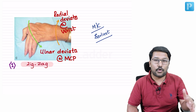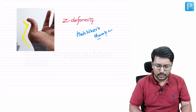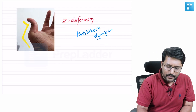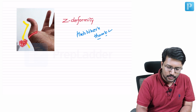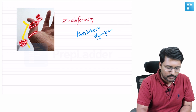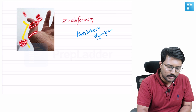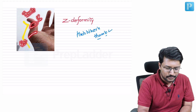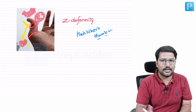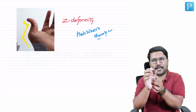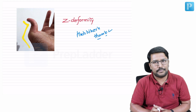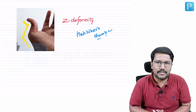Z deformity is also known as hitchhiker's thumb. In Z deformity, the metacarpophalangeal joint is flexed — there is flexion at the metacarpophalangeal joint and extension of the interphalangeal joint of the thumb. Since there is only one interphalangeal joint in the thumb, it is extension at the interphalangeal joint and flexion at the metacarpophalangeal joint. That is what is known as Z deformity.